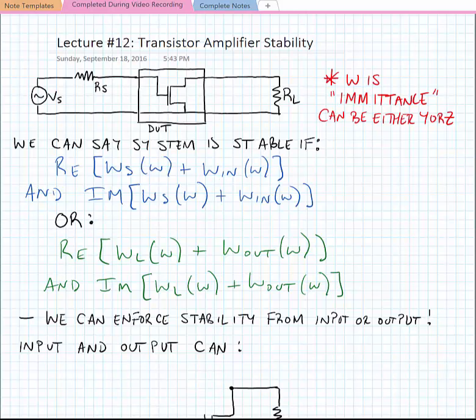So we can in general say a system is stable if the following conditions are met: the real part of W_s with respect to frequency plus W_in with respect to frequency is greater than zero, in other words we have a positive real resistance, and the imaginary part of W_s with respect to omega plus W_in with respect to omega is equal to zero.